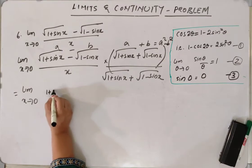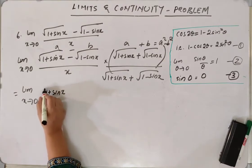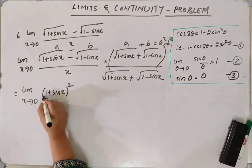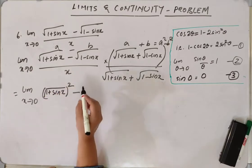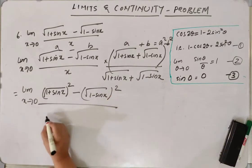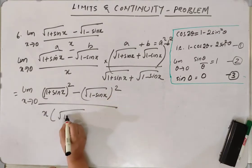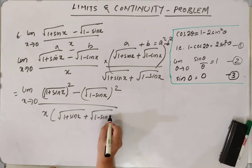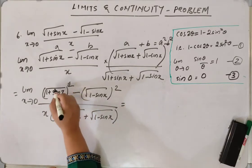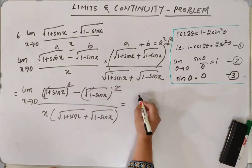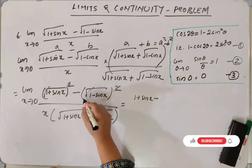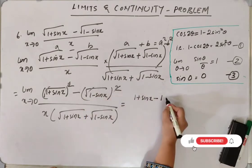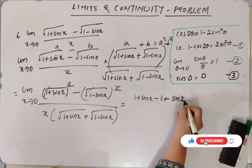So what is a here? 1 plus sin x. a square minus b square. And then we have x into 1 plus sin x plus root of 1 minus sin x. So your root and square will get cancelled. So we will have 1 plus sin x minus 1 minus, into minus plus sin x.